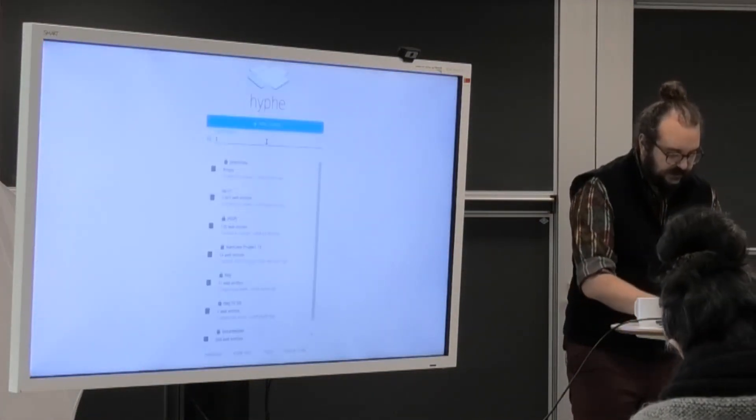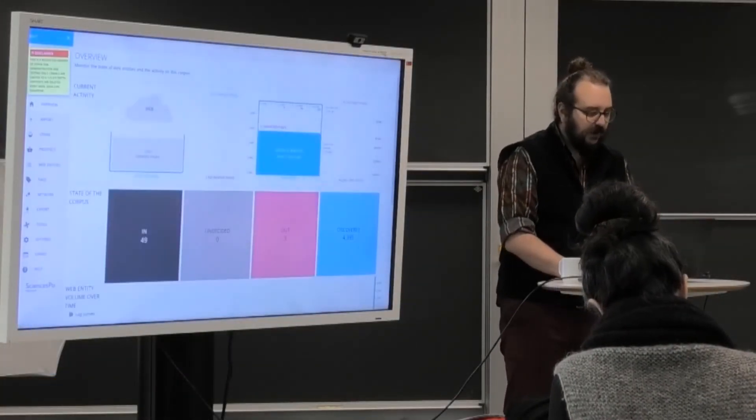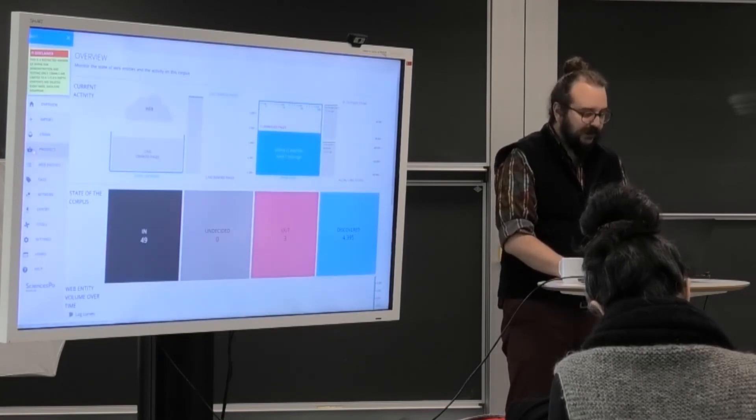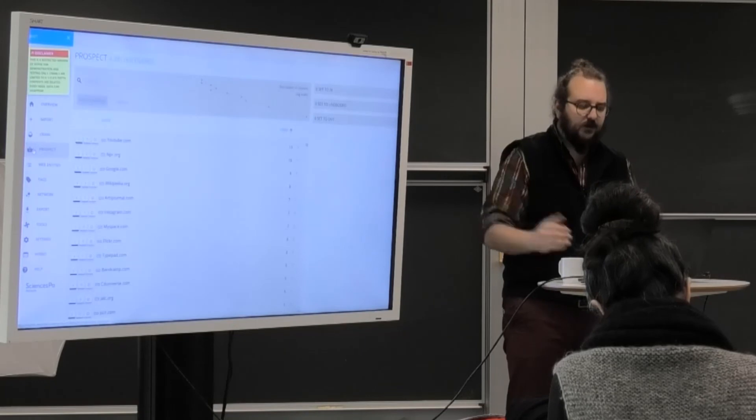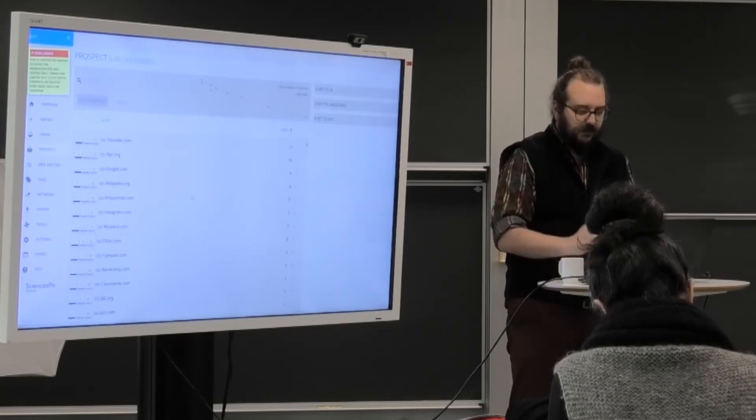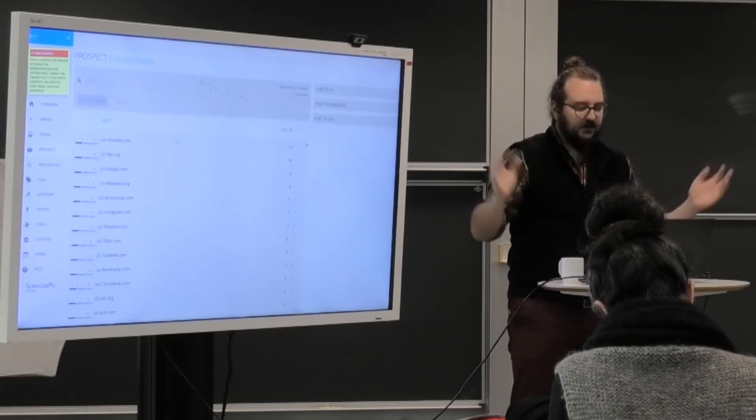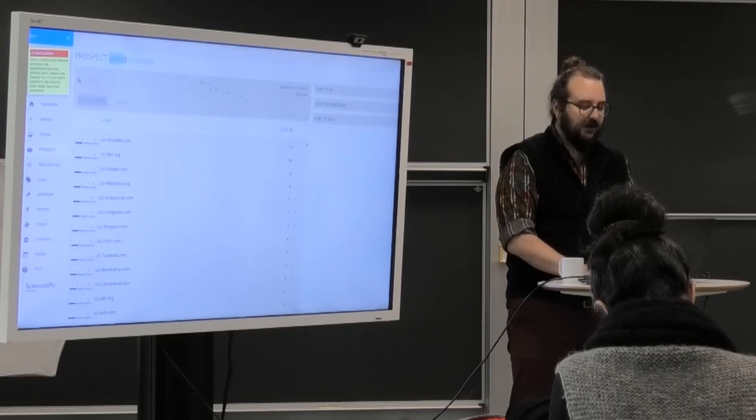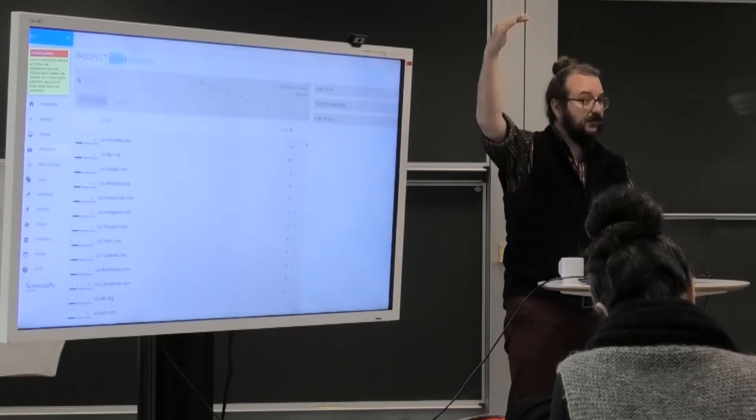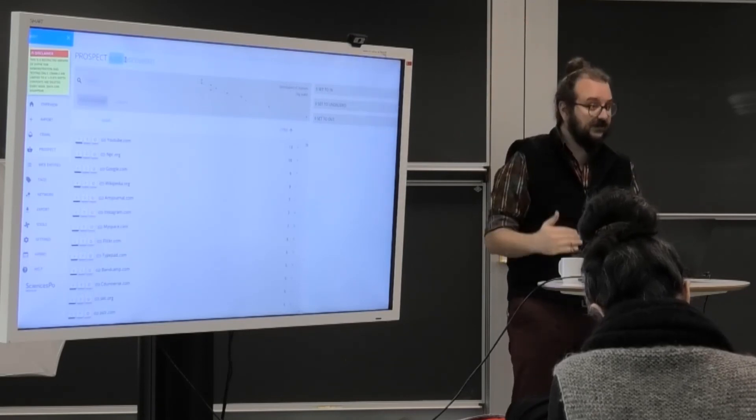And I'm going to show that to you now because that's the idea behind the prospection feature. So let's go back to the jazz corpus. Let's say I'm in the process of harvesting the community of jazz and I'm going to go in the prospect. We will see later the details of this page, but basically what you have to imagine is that we have many discovered web entities. In this situation, we have 4,000. It's actually a lot. And they have been sorted from the most cited to the less cited.